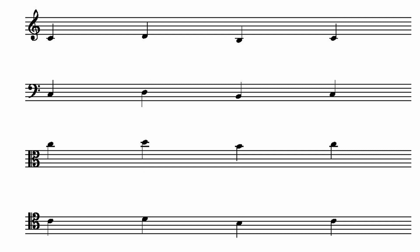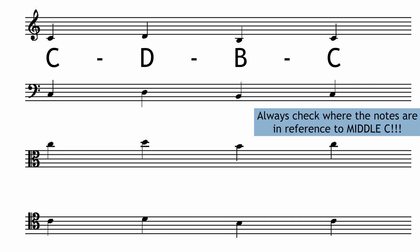This example has the notes C, D, B, and C but the octaves are different on some clefs. Always make sure to check where the notes are in reference to middle C when you're doing clef questions. Octaves may change but middle C will always remain the same. The bass clef notes here are an octave lower than the treble clef notes. The alto clef notes are an octave higher. The tenor clef notes are in the same octave as the treble clef.